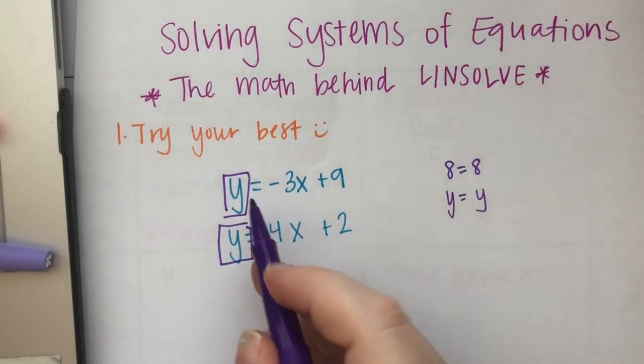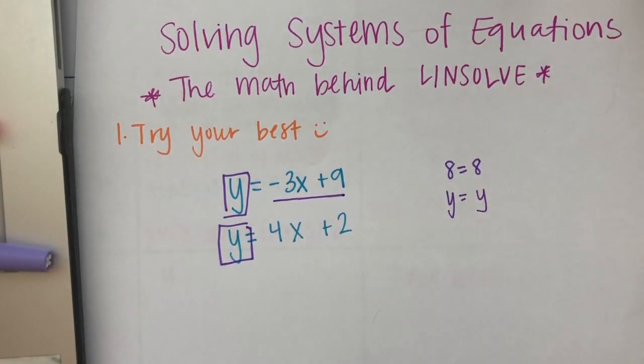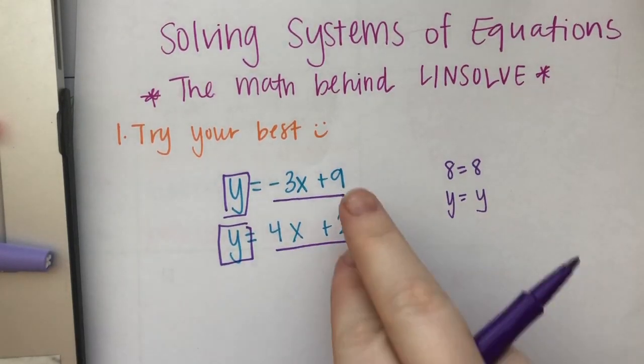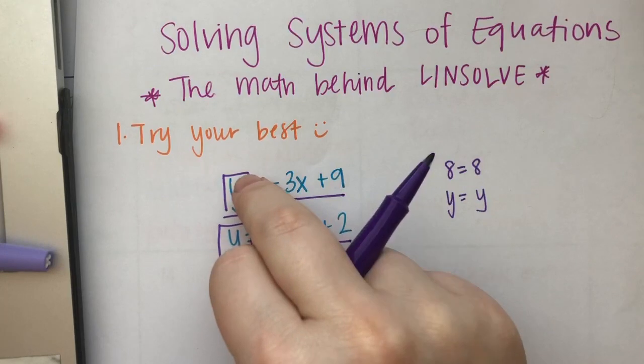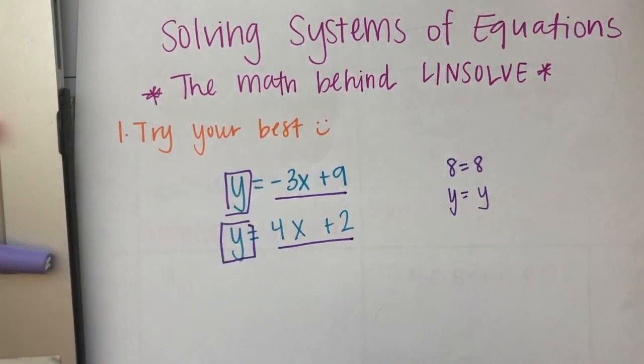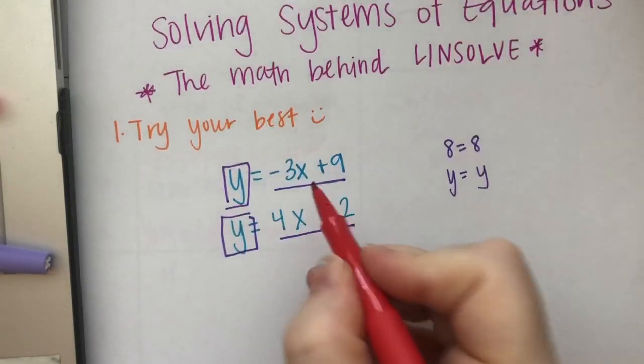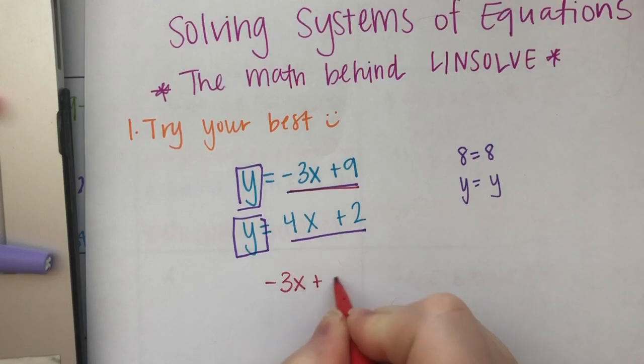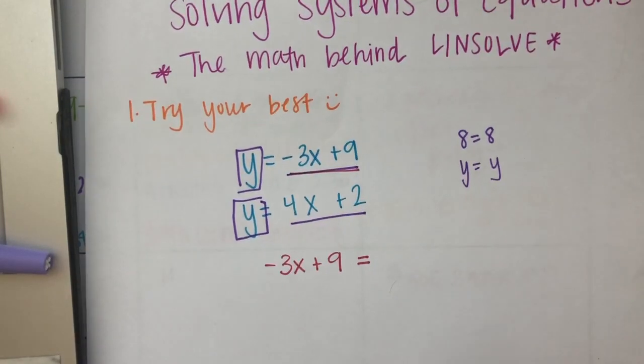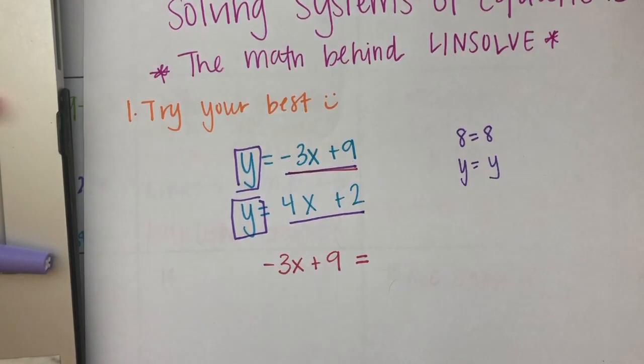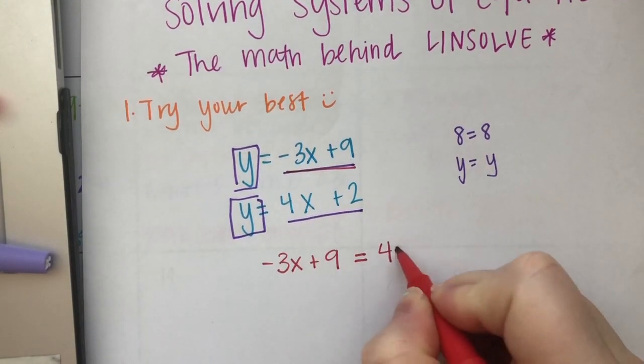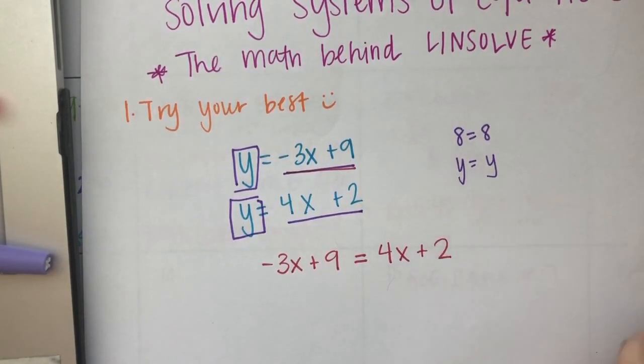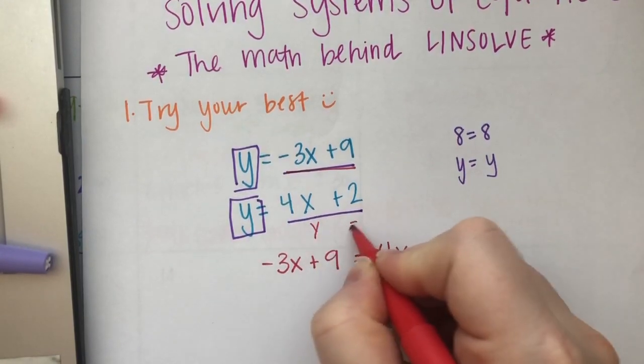So y in this equation is negative 3x plus 9, y in this equation is 4x plus 2, but both of these things equals y, which means both of these are actually equal to each other. So here's how we're going to write it. We're going to take this piece and say, okay, well, negative 3x plus 9 is equal to, well, this is y, that's y, so it's actually equal to 4x plus 2, right? This is the same thing as y equals y.